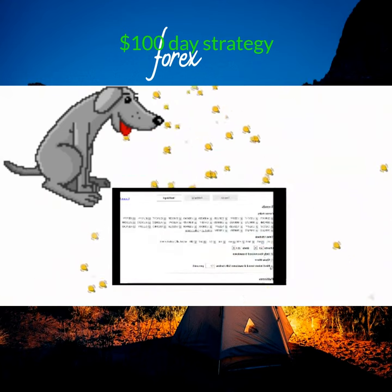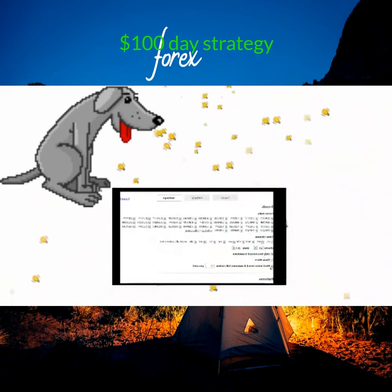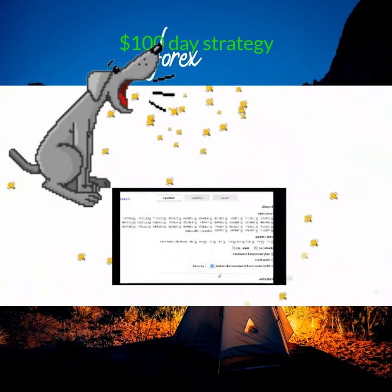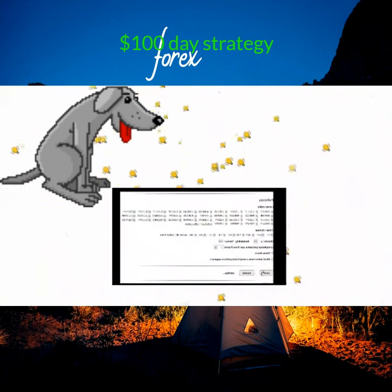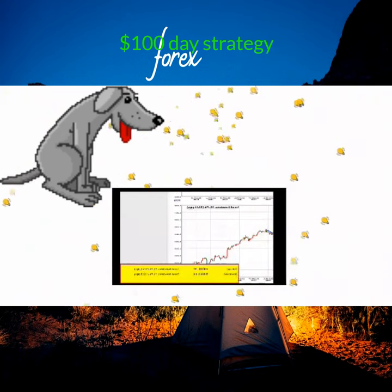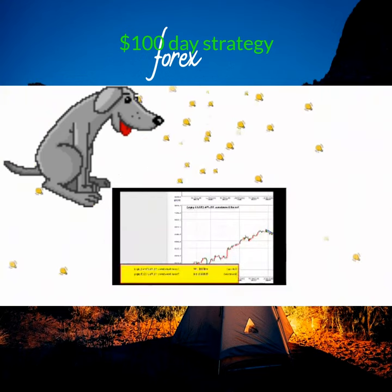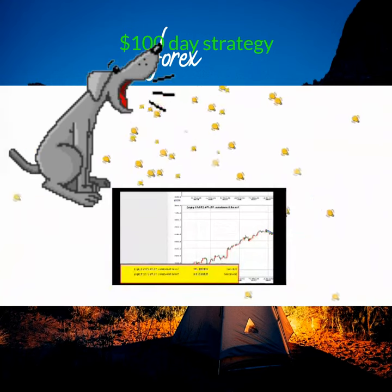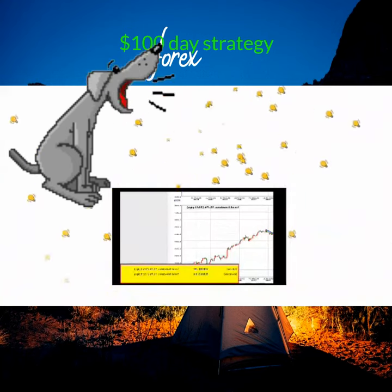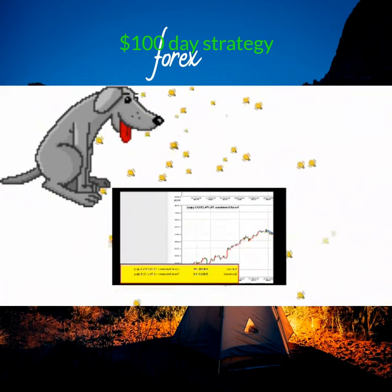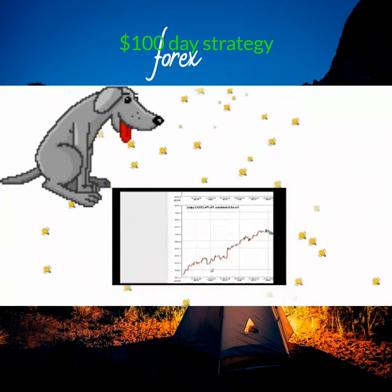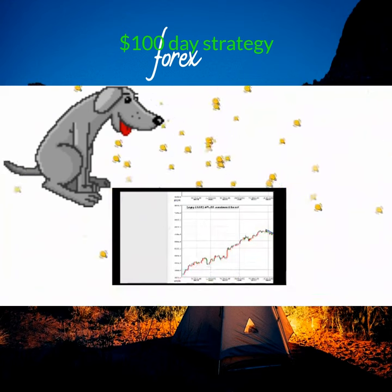You can set up alerts when the trend drawdown falls below, let's say, 15%. Then click save, and the audible alert will let you know when the lowest drawdown on any chart falls below 15%. Another approach used by more conservative traders is to check the charts just once or twice a day and simply make a trading decision — very easy.